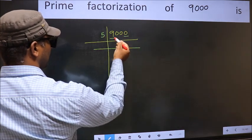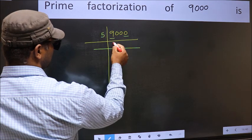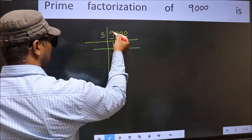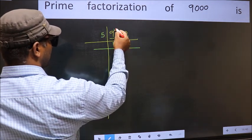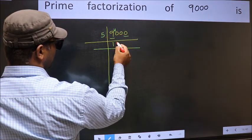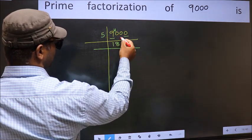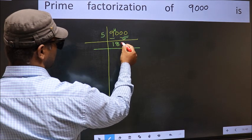First number 9. A number close to 9 in 5 table is 5 times 1 is 5. 9 minus 5, 4. 4 carried forward, 40. When do we get 40 in 5 table? 5 times 8 is 40. Now these 2 zeros as it is down.